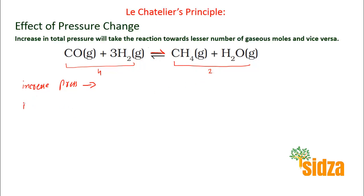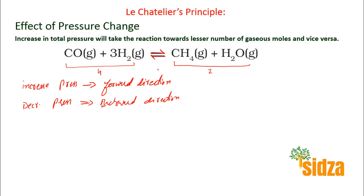If you decrease the pressure for this CO and hydrogen system, the equilibrium will shift in a direction where you have more gaseous moles — that means the equilibrium will shift in the backward direction. So increasing the pressure favors the forward reaction, and decreasing the pressure shifts the equilibrium in the backward direction.